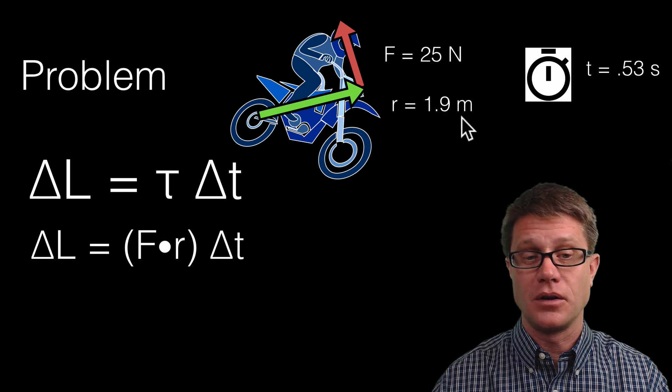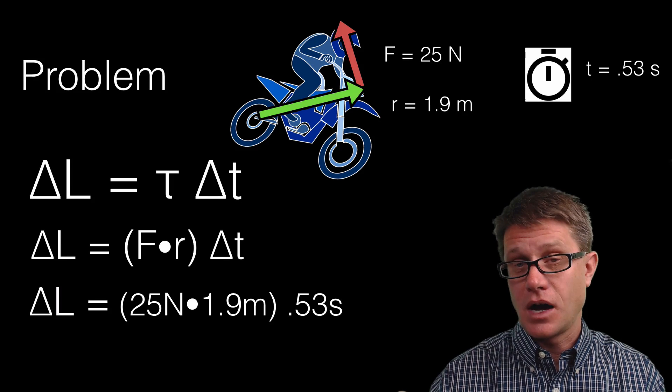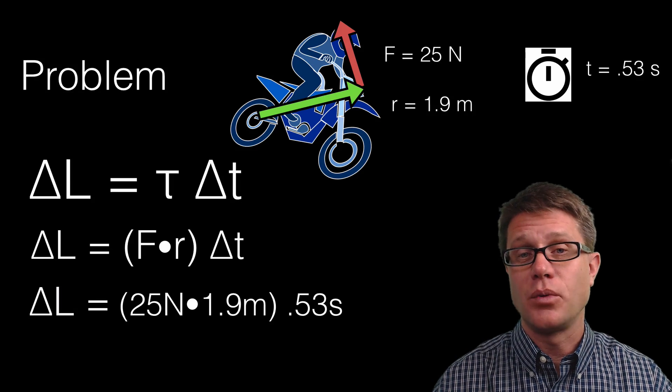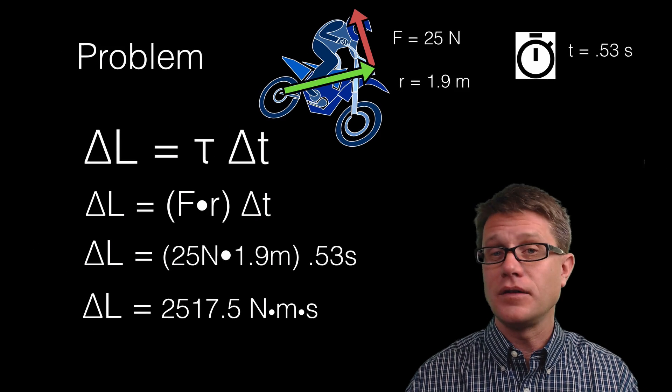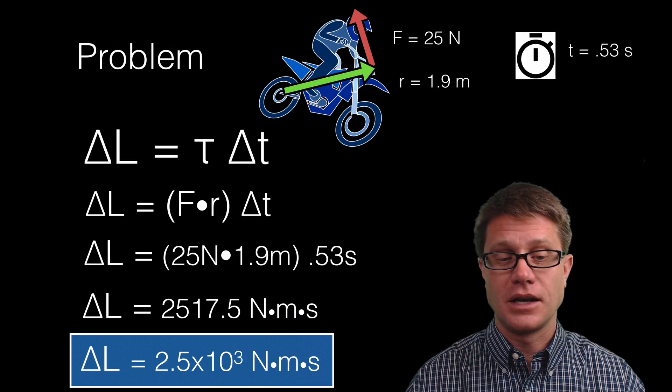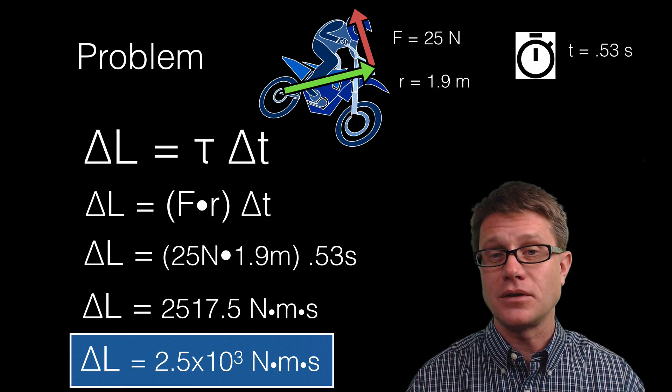So if I just plug in these values up here, what do we get? 25 newtons, 1.9 newton distance from the center, and then times 0.53 seconds, I get a change in angular momentum of this. Solving for significant digits I get 2.5 times 10 to the third newton meter seconds. That is going to be change in angular momentum.